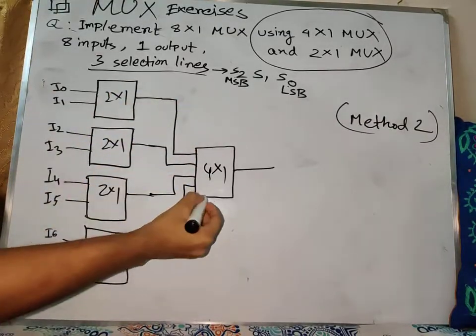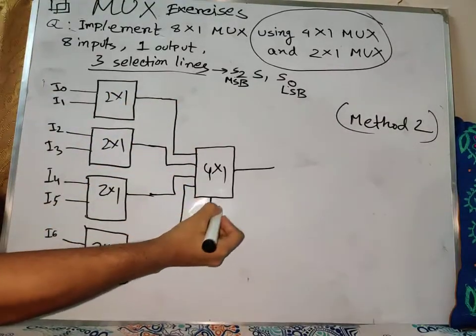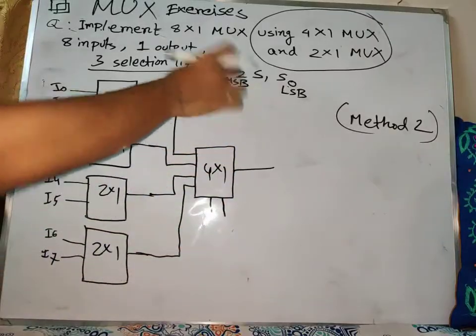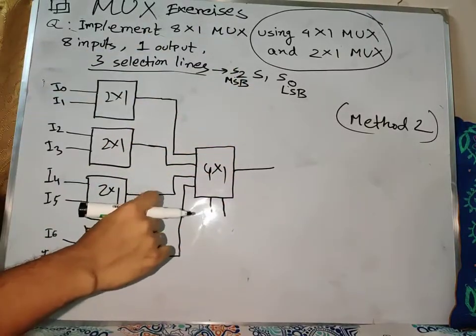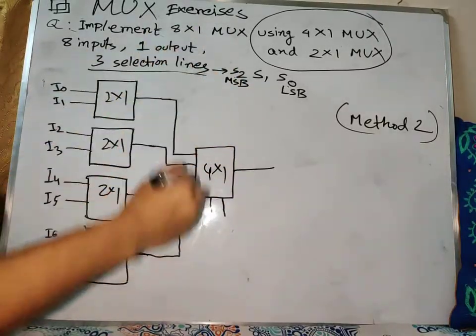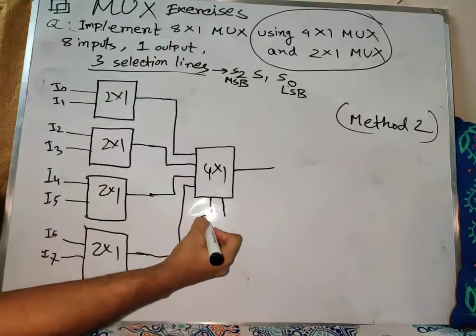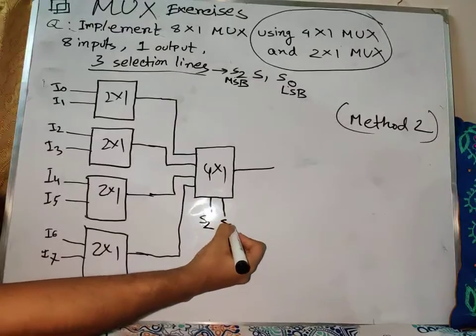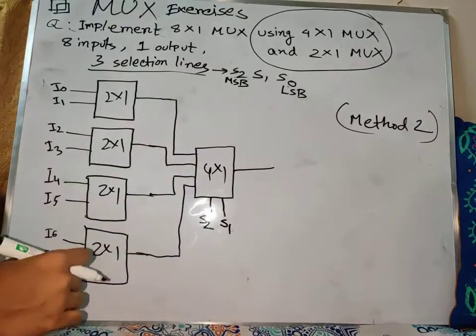Our selector has 2 inputs. We go to the MSB side, which is S2. Then we go to S1.